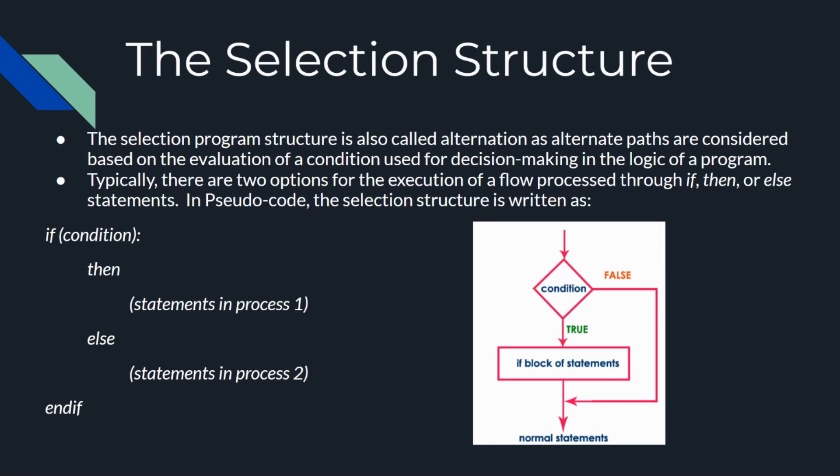A conditional expression can be constructed by comparing the values of two data items and using a relational operator. A conditional expression can be assigned to a variable and its value is of type Boolean. A compound conditional expression consists of one or more simple conditional expressions. The logical operators and, or, and not are used to develop compound conditional expressions from simpler conditions.